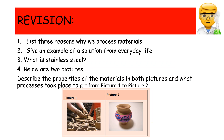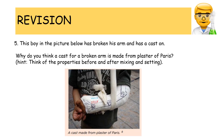Review questions: list three reasons why we process materials. Give an example of a solution from everyday life. What is stainless steel? Look at the two pictures and describe the properties of the materials shown, and what process took place to get from picture one to picture two. This boy has broken his arm and has a cast on — why do you think a cast for a broken arm is made from plaster of Paris? Think of the properties before and after mixing and setting.